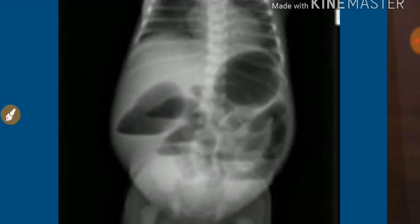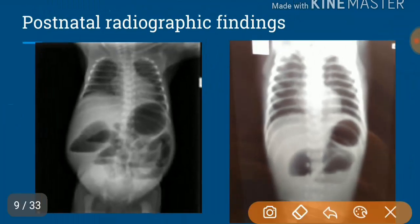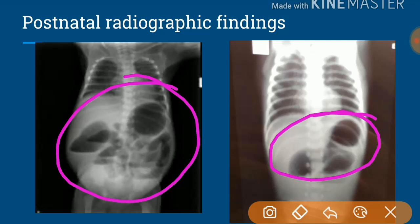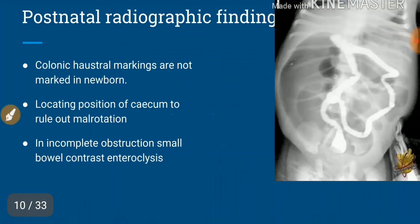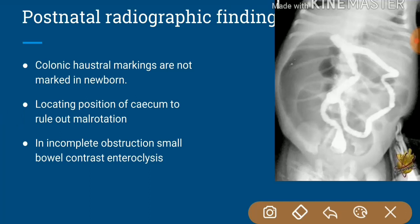The problem is, how will we know whether the dilated shadows are colonic or ileal? A classical triple bubble appearance is fine for diagnosis, but when the picture is not classical, we need to decide. For that, contrast enema helps us. Colonic haustral markings are not prominent in newborns, so we cannot distinguish colon from ileum by features alone — we have to go for a contrast enema to clarify any doubtful bowel shadows.